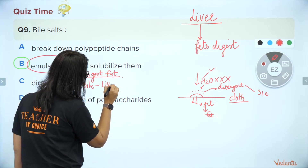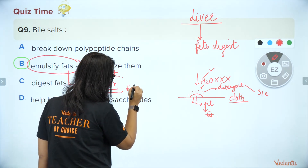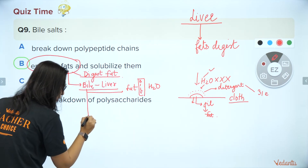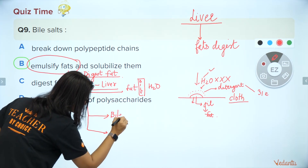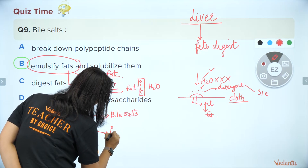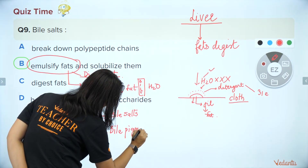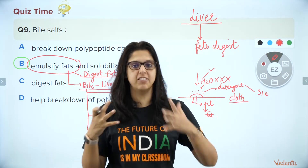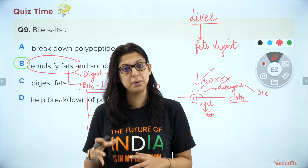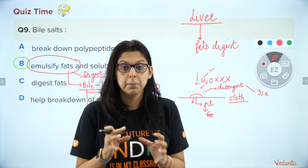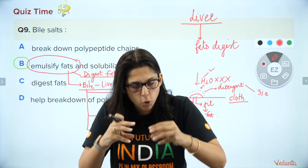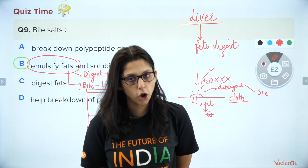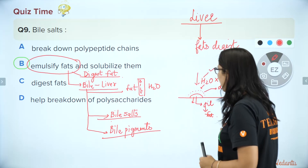Bile is what digests the fat. Bile is secreted by the liver. The bile sits between the fat and the water — the enzymes work in the aqueous phase. Bile is made up of two things: bile salts and bile pigments. Bile pigments come from the blood. They come from the liver. This is bile: made of bile salts and bile pigments. Bile is responsible for emulsification — meaning breaking down and solubilizing fats — so that when the fats become small, they can be absorbed in the intestine. Fats are very important because some hormones in our body are made from fat.